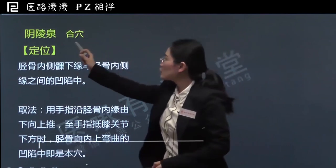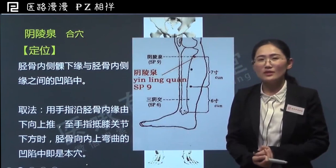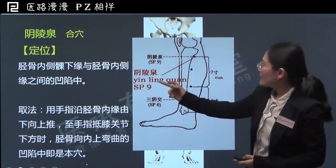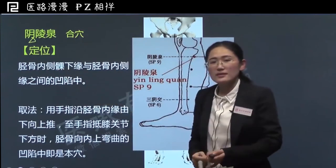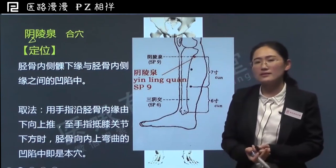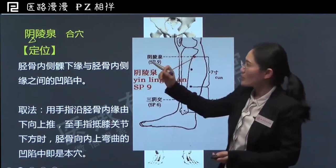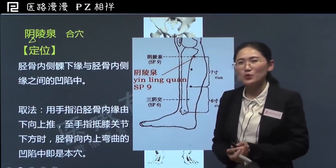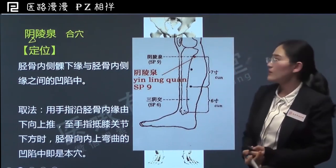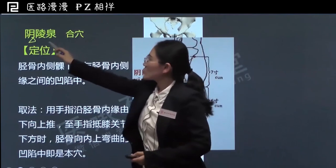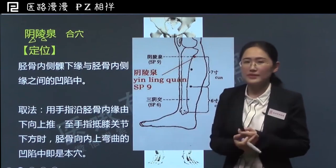今天学习的是足太阴脾经上的一个穴位，叫做阴陵泉。首先看一下阴陵泉这个名字的含义。阴，因为它位于胫骨内侧髁，也就是小腿的内侧，从阴阳属性上来说，内侧属阴，外侧属阳。与阴陵泉相对的，还有一个穴位叫阳陵泉，它是属于足少阳胆经上的穴位。